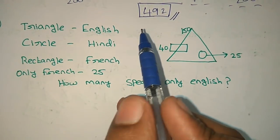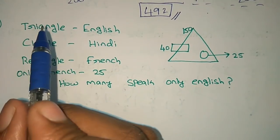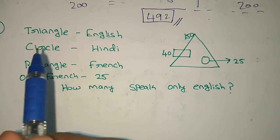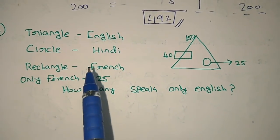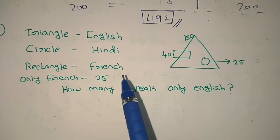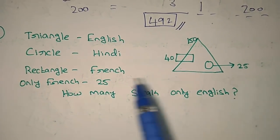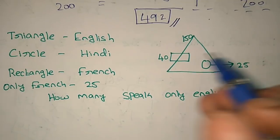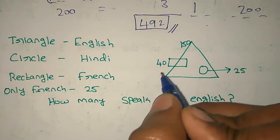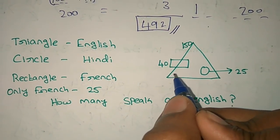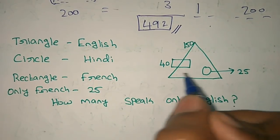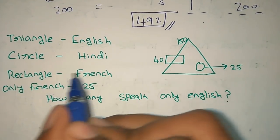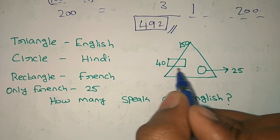The question is: in a figure, triangle is mentioned as English, circle is mentioned as Hindi, rectangle is mentioned as French. How many study only French? And how many speak only English? You will use a Venn diagram figure. The triangle represents English students, circles represent Hindi students, and rectangle represents French students.